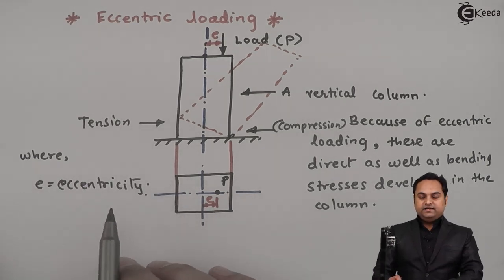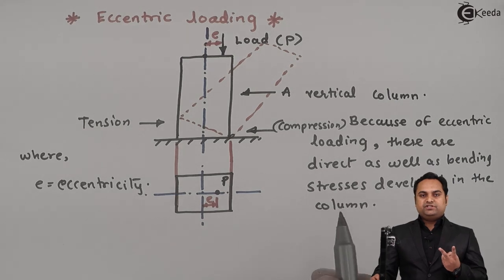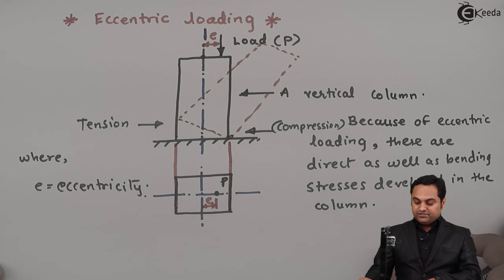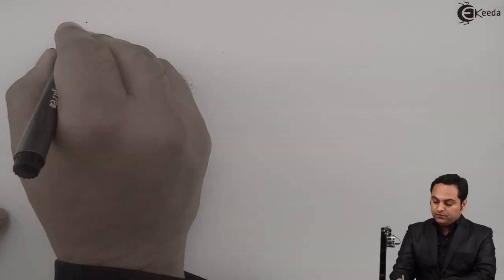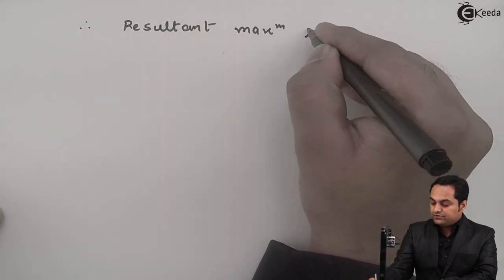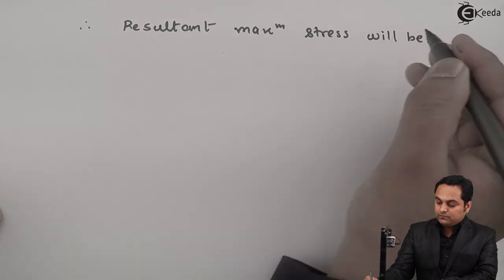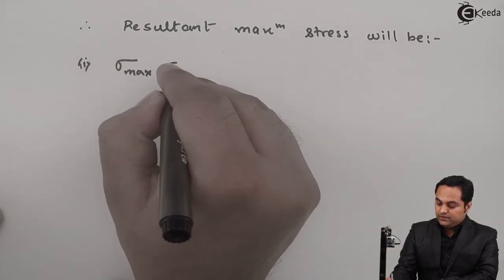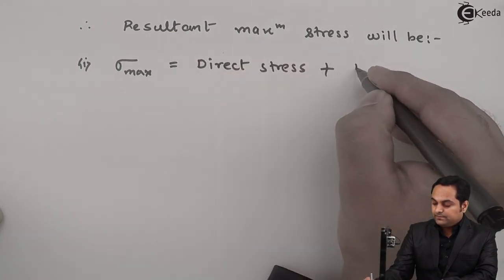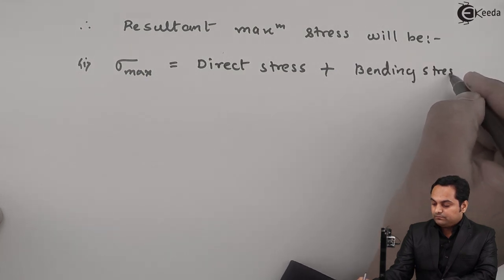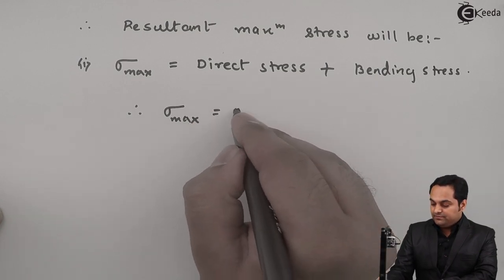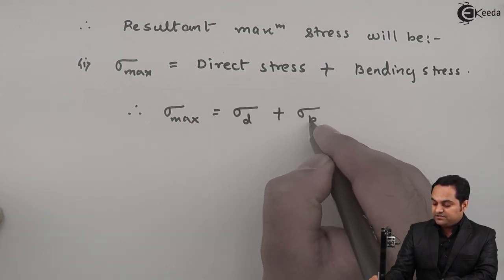Whenever the load is eccentric, there are two stresses which are set up in the column or a material: direct as well as bending stresses. The resultant maximum stress sigma max is equal to direct stress plus bending stress, where direct stress is denoted by sigma suffix D and bending stress by sigma suffix B.